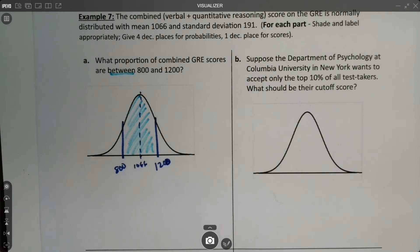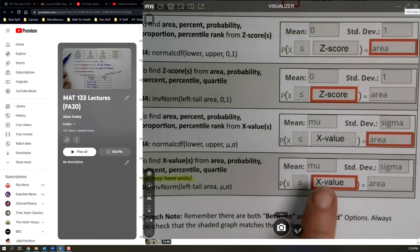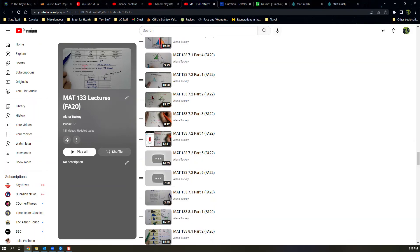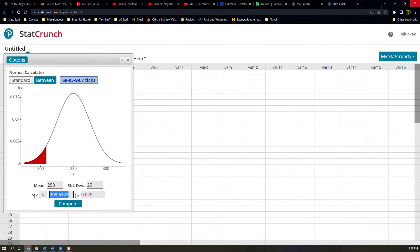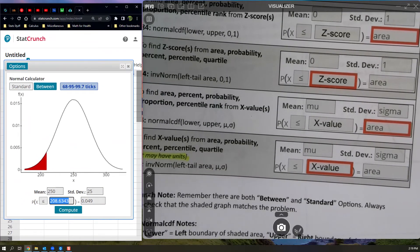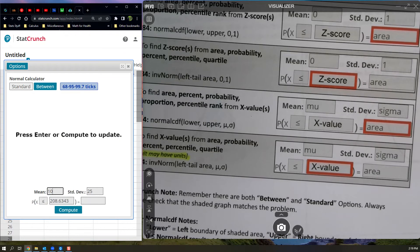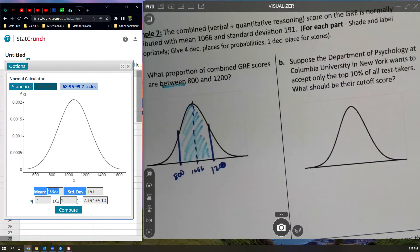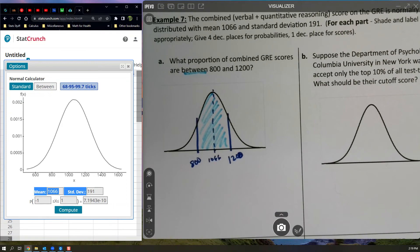So we're going to StatCrunch. We're going to put in the X value and find the value. Oh sorry, I forgot to switch it back. I'm uploading videos in between. So first thing I'm going to do is change that. So it's 1066, 191. You always have to change the mean and standard deviation for every problem. I'm going to do a between one because it said between. I'm going to put 800 over here and 1200 over here and then say compute.